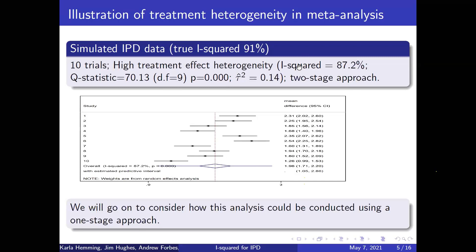Estimating I-squared using a two-stage approach, it comes out to be 87% in this particular dataset. The Q statistic is highly statistically significant, and tau-squared is equal to 0.14. So I'm going to go on to consider how we might replicate this using not a two-stage approach, but a one-stage approach.